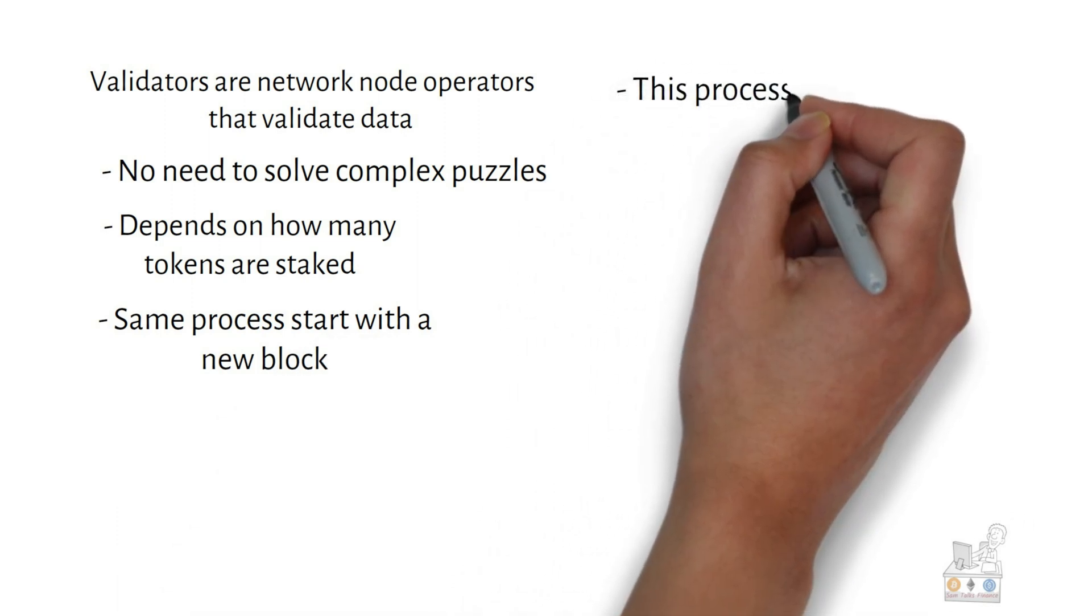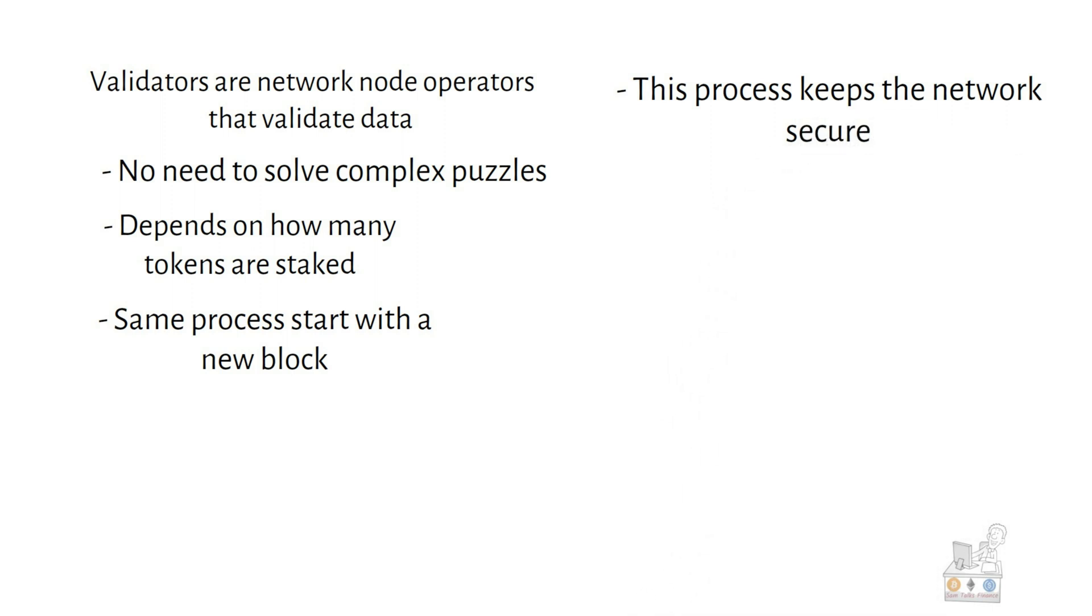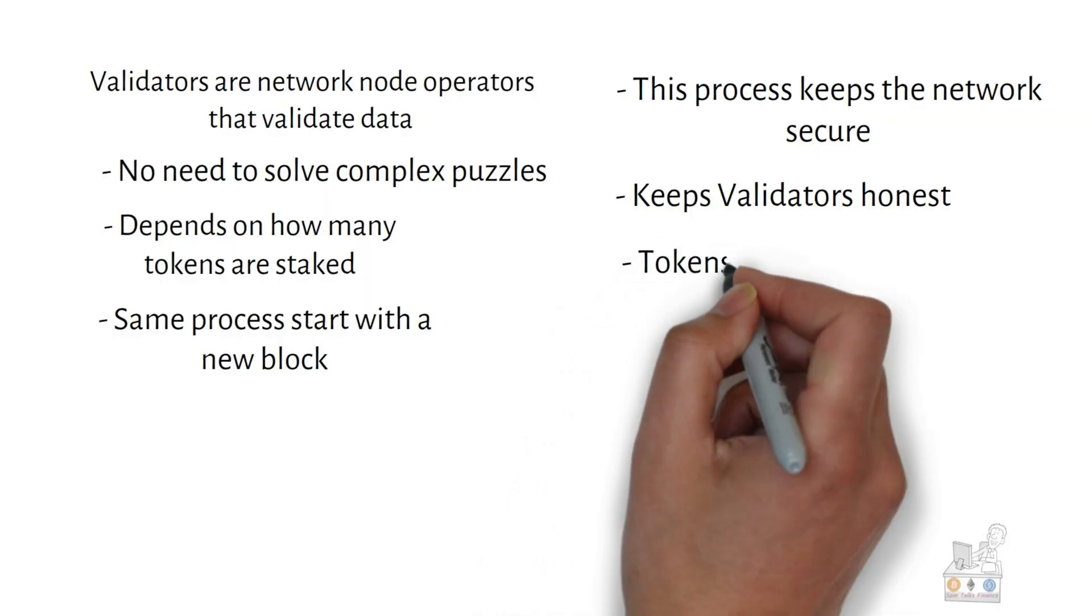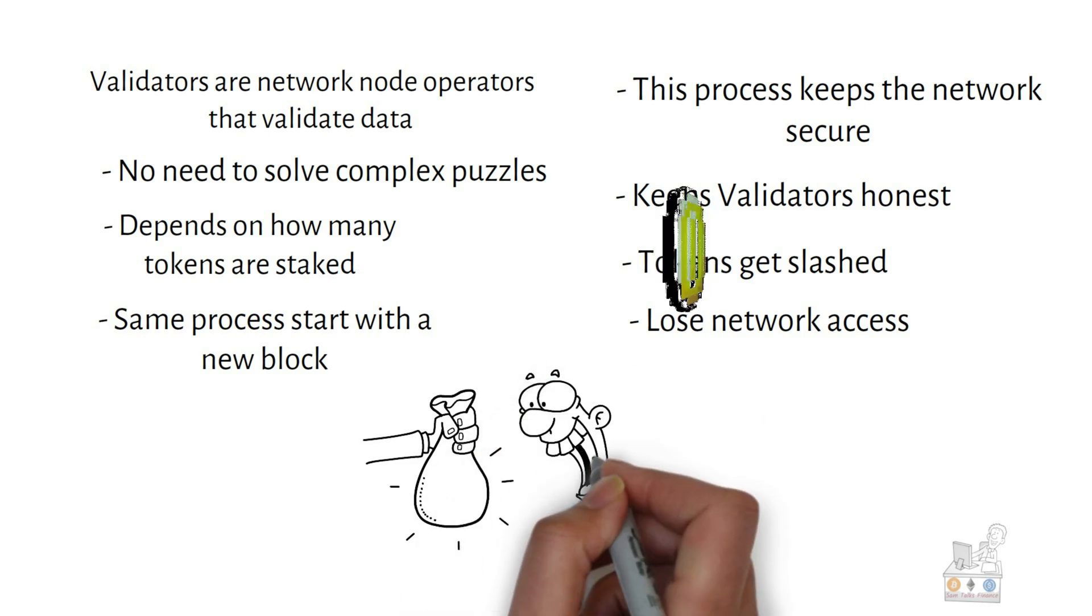Within a proof-of-stake blockchain, network security depends on the validator's integrity. If validators show harmful behavior, they get slashed and lose network access. This process is called slashing, and this incentive structure promotes equitable virtue.